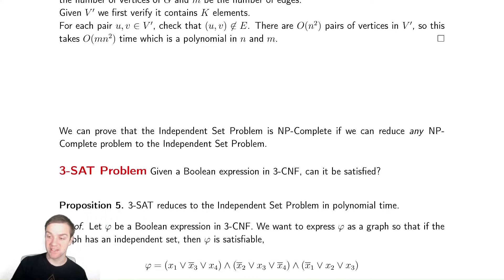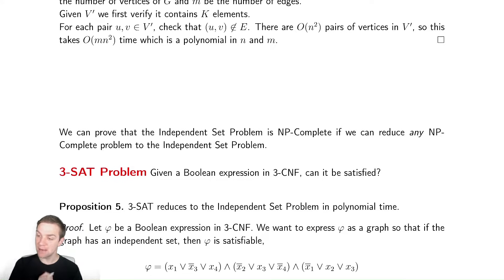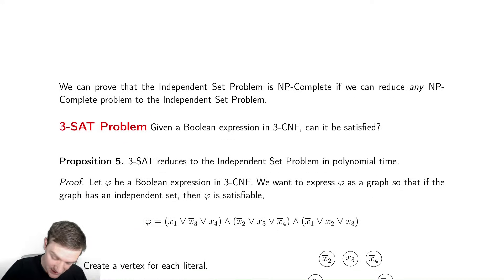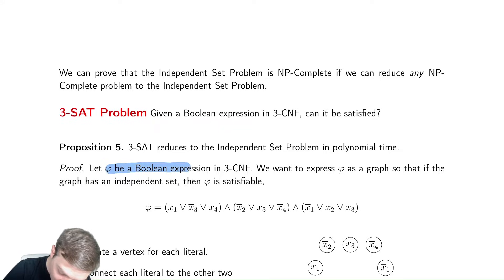The one we're going to choose is the 3-SAT problem: given a Boolean expression in 3-CNF, can it be satisfied? We're going to start with 3-SAT, do some refiguring of the problem until we can write it in terms of independent set. Our input is an instance of 3-SAT, a Boolean expression in 3-CNF. We need to reduce it to a graph and ask: does that graph have an independent set of a certain size?